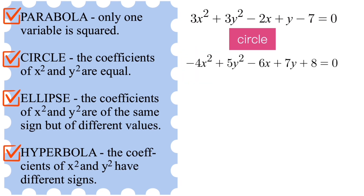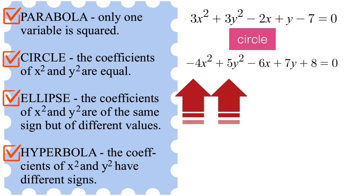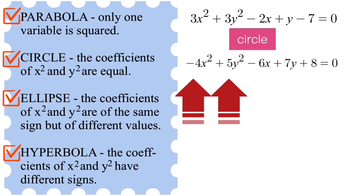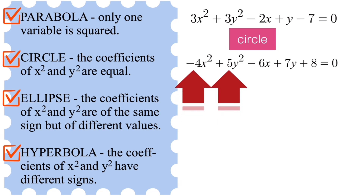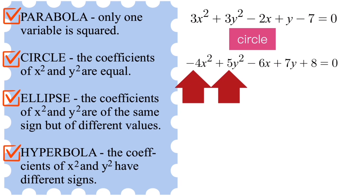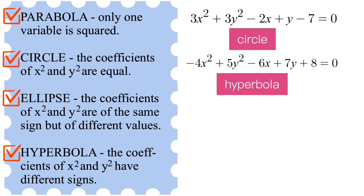In this next example the coefficients of the squared variables x² and y² have different signs — negative 4 and positive 5. One is negative and the other is positive. This tells us that this is an example of a hyperbola.